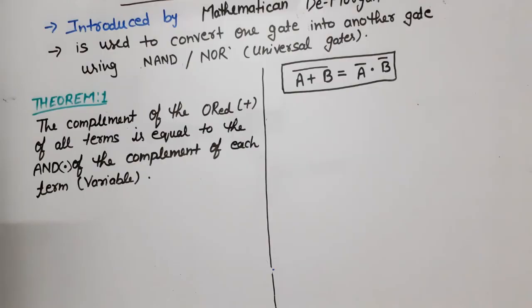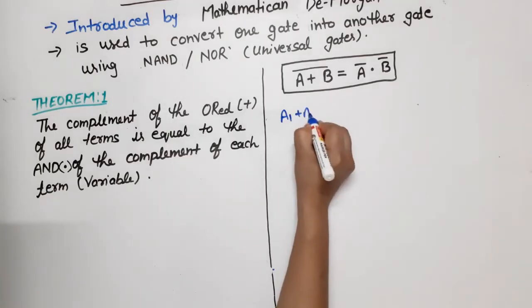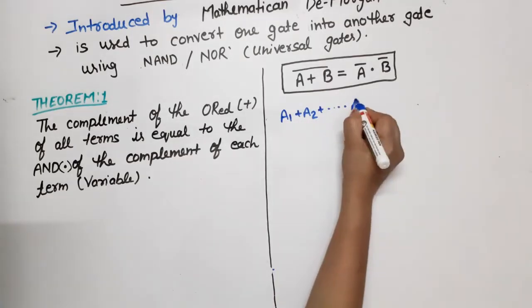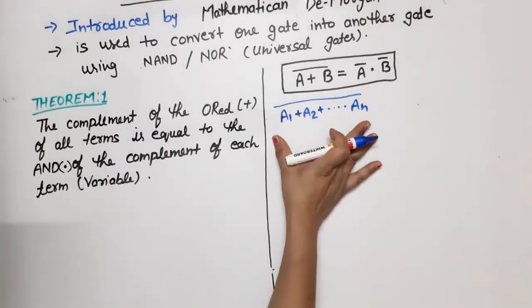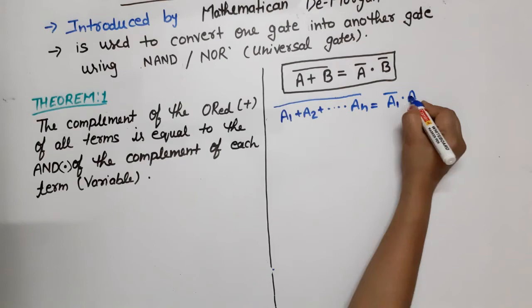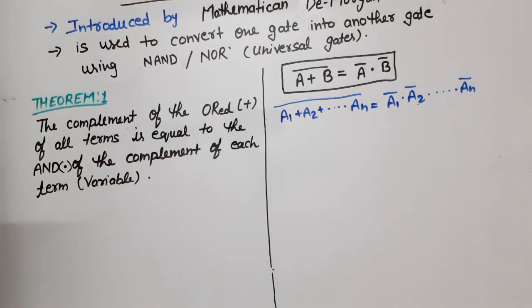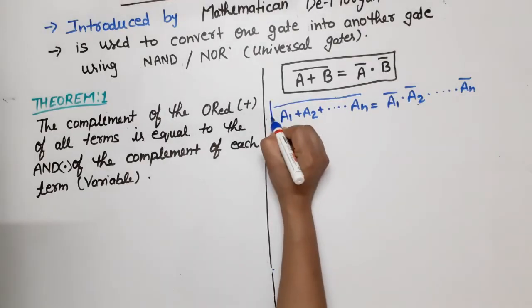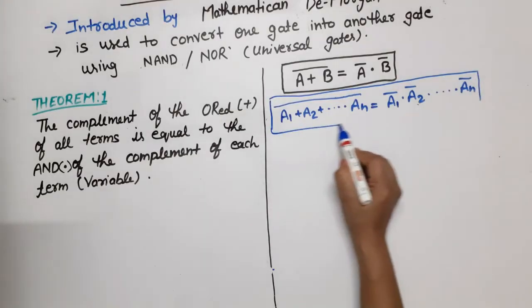Suppose we have n variables. In that case, the expression is: A1 plus A2 plus ... plus An. The complement of the total OR is equal to the AND of the complement of each individual term — that is, A1 bar dot A2 bar dot ... dot An bar. This is the expression when there are n variables.